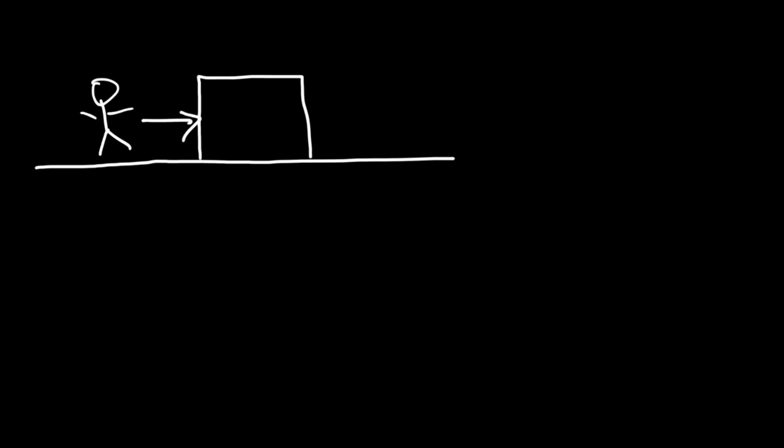In this video, we're going to focus on static friction and kinetic friction. Let's say this is a carpet floor and there's a big box. Imagine if you're trying to push the box — applying a force to move it. Initially, as you begin to push it, the box doesn't move. But eventually, if you continue to push with even more force, it will begin to slide. And once it begins sliding, it's easier to continue pushing it. But once you stop it, it's going to be hard to start it up again.